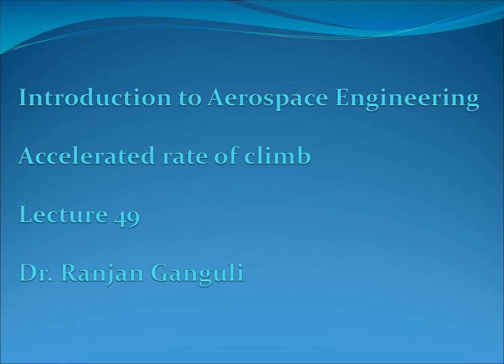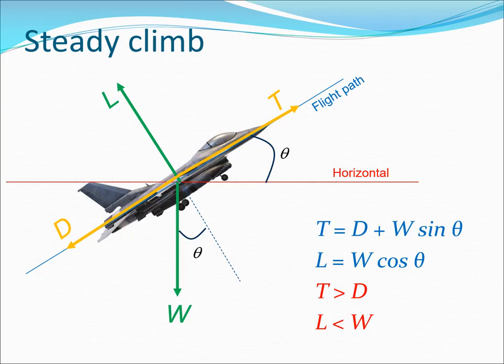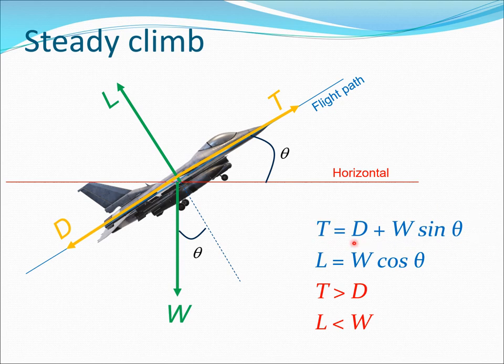Welcome to lecture 49 in our aerospace engineering course. Today I am going to discuss accelerated rate of climb. This is climb but now with acceleration, instead of just the steady state we discussed in a previous lecture. Let us go back to that steady climb picture: the aircraft has various forces acting on it — lift, weight, drag, and thrust. In steady climb, the force balance gives us: thrust equals drag plus weight times sine theta.